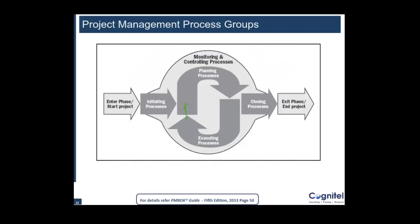Some of your planning so you might go back to planning, then again execution. This cycle would repeat itself for as long as it is required for the successful completion, and then you would be closing your project or a phase. Monitoring and controlling is something that would keep on going right from the start till the very end of the project.